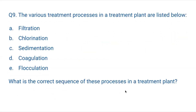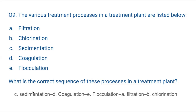Question 9: The various treatment processes in a treatment plant are listed — filtration, chlorination, sedimentation, coagulation, and flocculation. What is the correct sequence of these processes? Both question 8 and 9 are essentially the same question asked differently. The correct sequence is: sedimentation → coagulation → flocculation → filtration → and finally chlorination (disinfection).